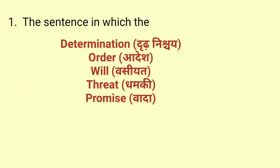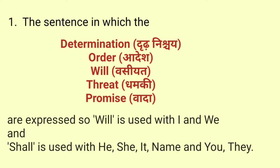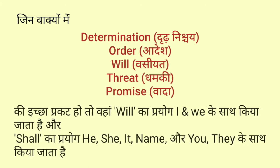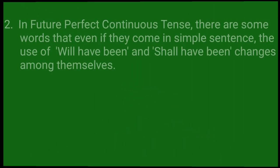The sentences in which determination, order, will, threat, or promise are expressed — 'will' is used with I and we, and 'shall' is used with he, she, it, name, you, and they. जिन वाक्यों में दृढ़ निश्चय, आदेश, वसीयत, धमकी, वादा आदि की इच्छा प्रकट होती है, वहाँ will का प्रयोग I और we के साथ किया जाता है और shall का प्रयोग he, she, it, name, you, they के साथ किया जाता है।